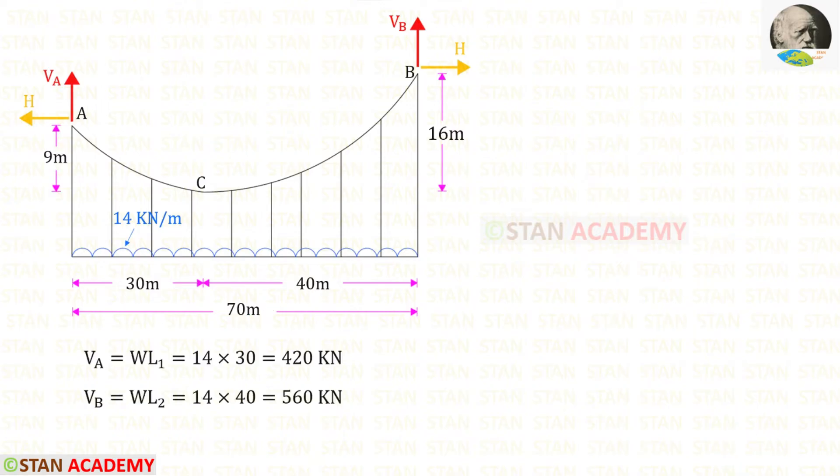Now let us find the vertical reactions Va and Vb. We know the formulas to find them. To find Va the formula is W times L1. W is 14 and L1 is 30. For Va we will get 420. The formula to find Vb is W times L2. W is 14 and L2 is 40. Finally for Vb we will get 560 kN.